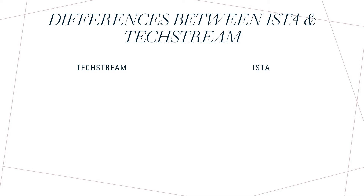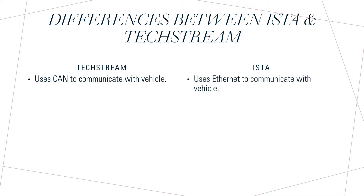Before we get into PAD mode and into using ISTA, let's first take a look at the differences between ISTA and TechStream. First of all, TechStream uses CAN — controller area network — which is what Toyota has used for many years to communicate with our vehicles. With the Supra and ISTA, it uses Ethernet to communicate with the vehicle, which means there will be a dedicated cable used specifically for the Supra.